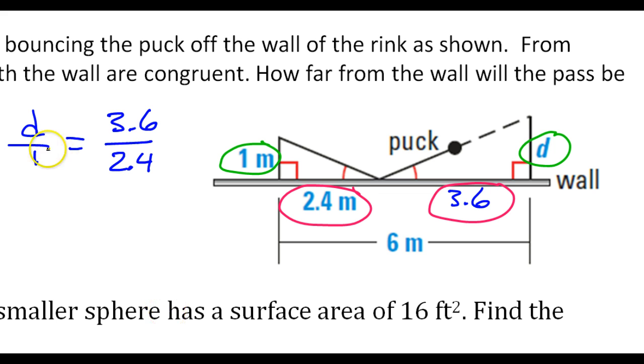Now that makes it really easy if we set it up that way. We don't even have to cross multiply because we already have D by itself. D over 1 is just D. So all we really need to do is divide, 3.6 divided by 2.4.